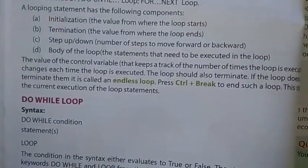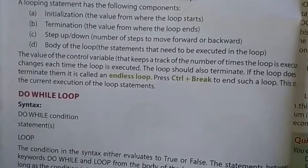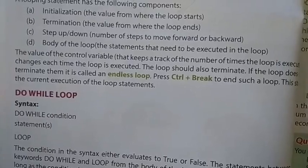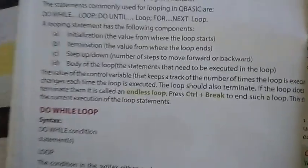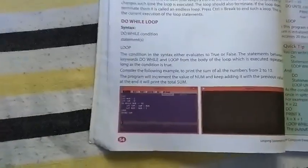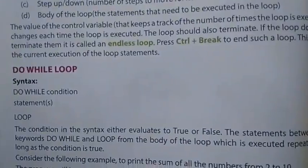The value of the control variable keeps track of the number of times the loop is executed. It changes each time the loop is executed. Each time we execute the program and start it, that value will change.